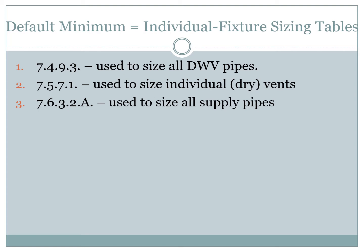We're going to start with three major tables. In the Ontario Building Code, when you see 7-4, the seven means plumbing and four means drain — so this is where you find your drain and waste sizing. Vents are under 7-5: seven is plumbing, five is vents, and there's a table for sizing individual dry vents. And then seven-six: six is water supply, which is the water that feeds the fixture. For these three tables, we're just going to take a quick look at them.